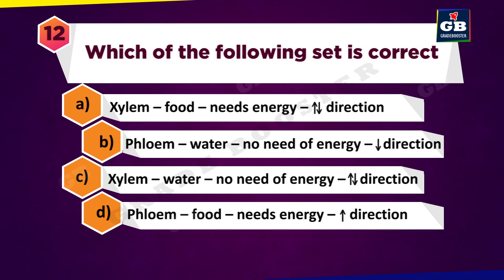Which of the following set is correct? A. Xylem, food, needs energy, upward and downward direction. B. Phloem, water, no need of energy, downward direction. C. Phloem, food, needs energy, upward direction.